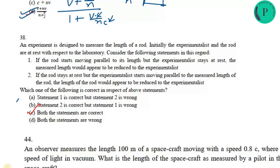An experiment measures the length of a rod. First statement: if the rod starts moving parallel to its length while the experimenter stays at rest, the measured length appears reduced — this follows the length contraction formula and is valid. Second statement: if the experimenter starts moving parallel to the rod while the rod stays at rest, the measured length also appears reduced. Both statements are correct, as both follow from the length contraction formula.